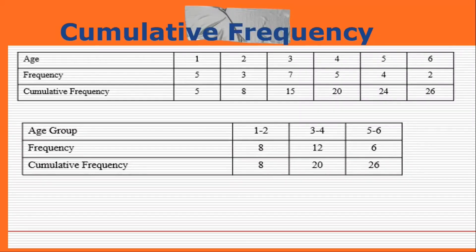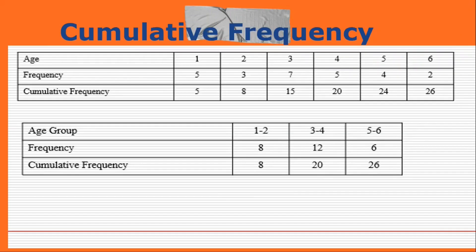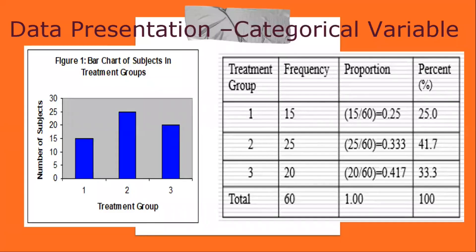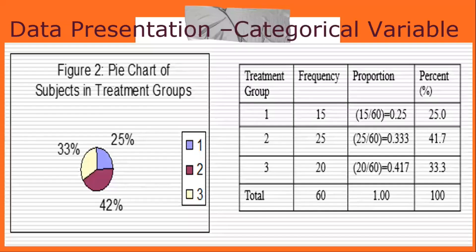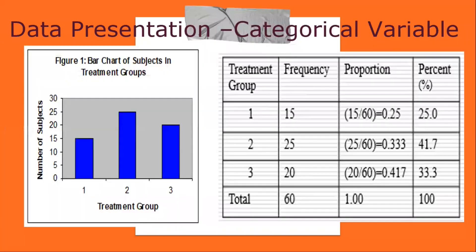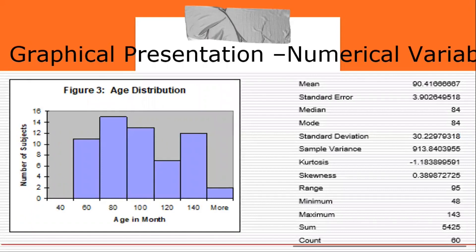There are two types of statistical presentation of data: graphical and numerical. In graphical presentation, we look for the overall pattern and for striking deviations from that pattern. The overall pattern is usually described by the shape, center, and spread of the data. An individual value that falls outside the overall pattern is called an outlier. Bar diagrams and pie charts are used for categorical variables, while histograms, stem-and-leaf plots, and box plots are used for numerical variables.